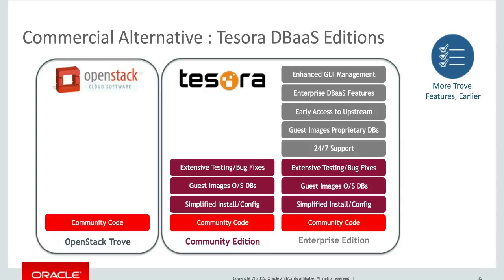While OpenStack is more focused on open source databases, the Tesoro Enterprise Edition provides support for more proprietary databases, such as Oracle Database 11g and 12c, including the multi-tenant features of Oracle Database 12c. So you could, for example, install the Oracle OpenStack platform or the Red Hat OpenStack distribution and instead of the standard Trove RPM, install the Tesoro Database-as-a-Service offering.